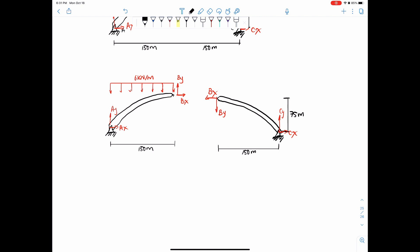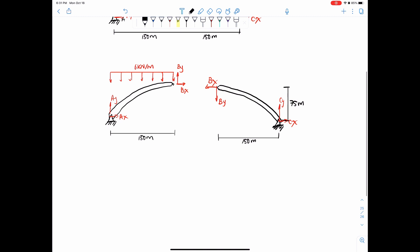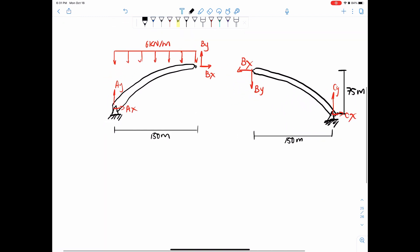So let's just first find BY and BX. We can start off that way. So we can just do a sum of moments around point A. Counterclockwise equals positive and set that equal to zero. So from our distributed load, we have 6 kilonewtons per meter times 150 times 75. So that's 150 divided by 2. Again, just imagine you're replacing the entire distributed load with a point load. You're applying it at the middle. That's going straight up and down.